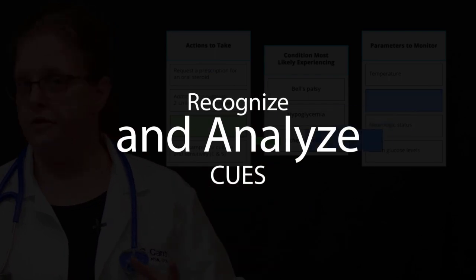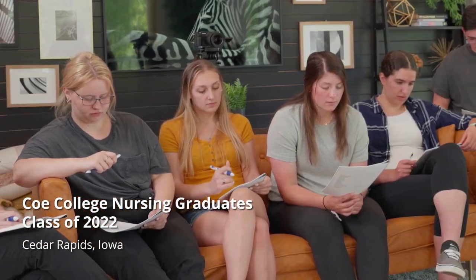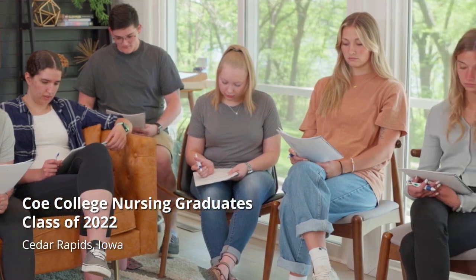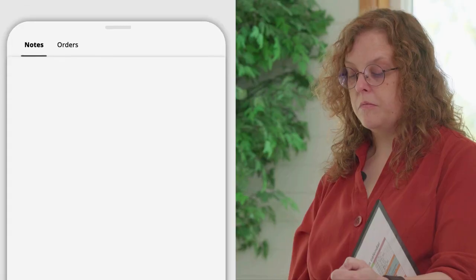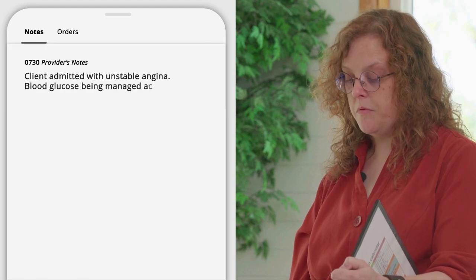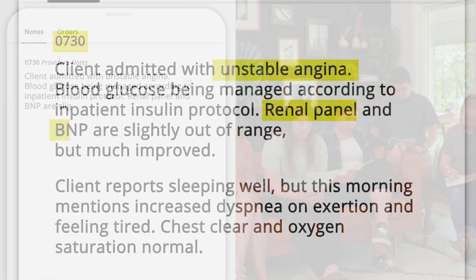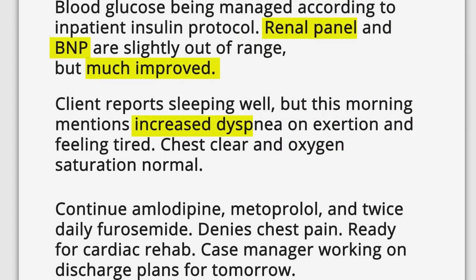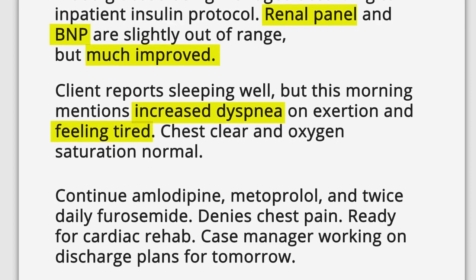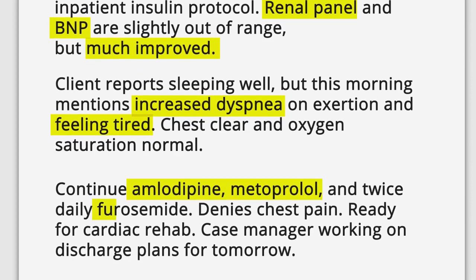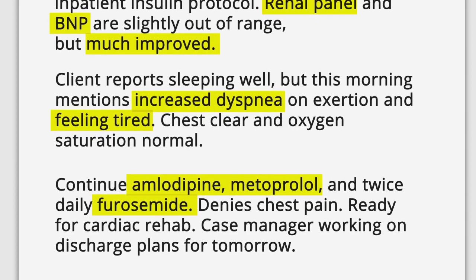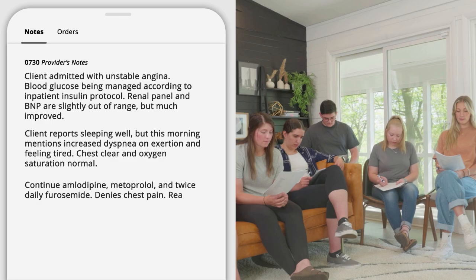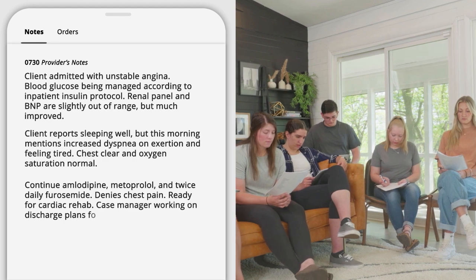We're going to start with the cardiology case study. The case progresses from 7:30 to 12:35. At 7:30, the provider's note states the client was admitted with unstable angina, blood glucose being managed per inpatient insulin protocol, renal panel and BNP slightly out of range but much improved. Client reports sleeping well but this morning mentions increased dyspnea on exertion and feeling tired. Chest clear, oxygen saturation normal. Continue amlodipine, metoprolol, and twice-daily furosemide. Denies chest pain, ready for cardiac rehab. Case manager working on discharge plans for tomorrow.